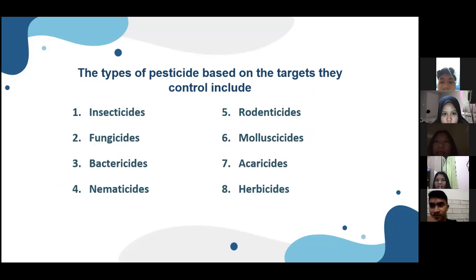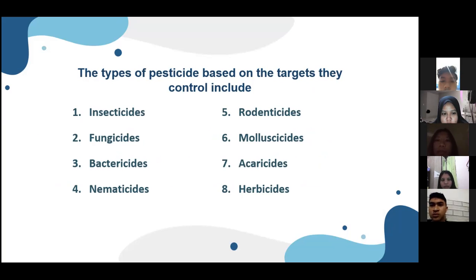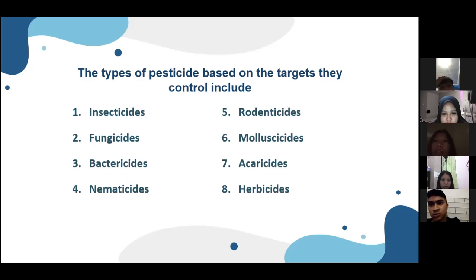Types of pesticides based on the target they control include: one, insecticides; two, fungicides; three, bactericides; four, nematicides; five, rodenticides; six, molluscicides; seven, acaricides; and eight, herbicides.